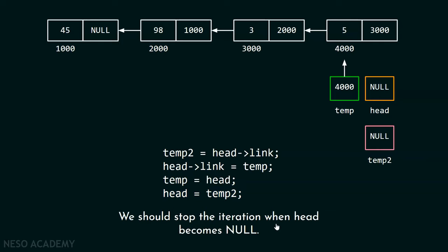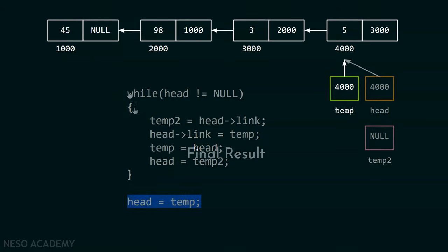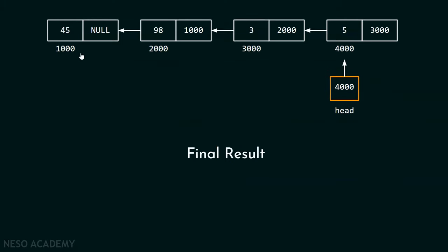The idea is to stop the iteration when head becomes null. We put these four lines of code inside a while loop that checks: is head equal to null? If head becomes null, we exit the loop. After the loop, we update the head pointer by assigning temp to head, so it points to the last node. This is the complete process to reverse the whole single linked list.